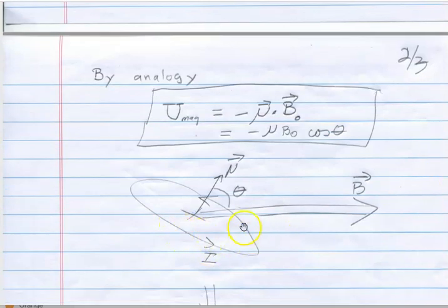So if we have a current I going in this direction, then its dipole moment points perpendicular to it in this direction. And the angle between μ vector and B is the theta.